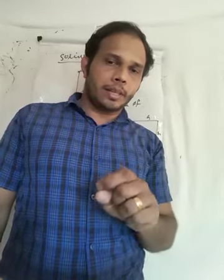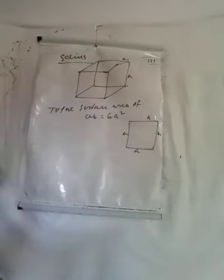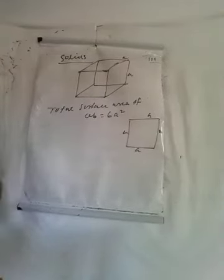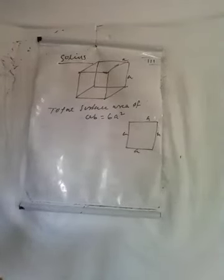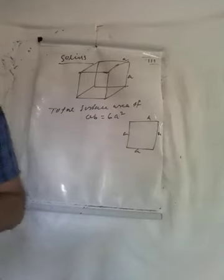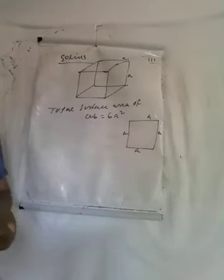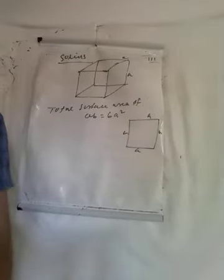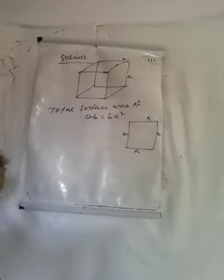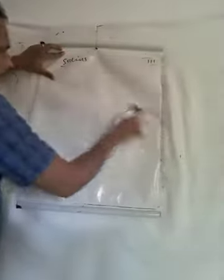Total surface area of a cube equals 6a². Now we are going to discuss the total surface area of a cuboid. You already know the concept of a cuboid. This is in your textbook, page number 180 — the surface area of a cube, cuboid, and related topics are given there.